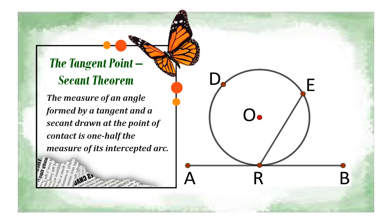The Tangent-Point-Secant Theorem states: the measure of an angle formed by a tangent and a secant drawn at the point of contact or point of tangency is one-half the measure of its intercepted arc. Our focus is now on the angle formed at the point of tangency where the secant intersects the tangent segment.